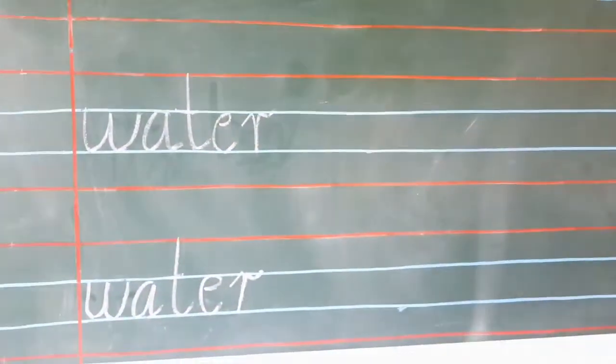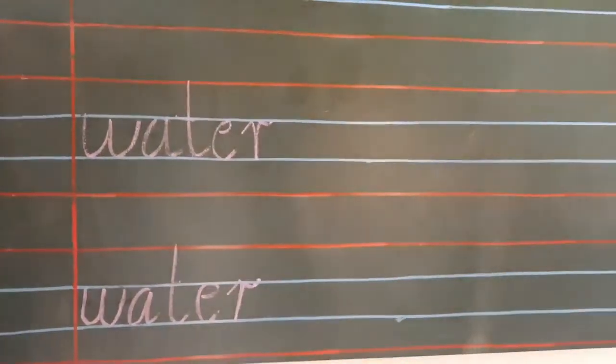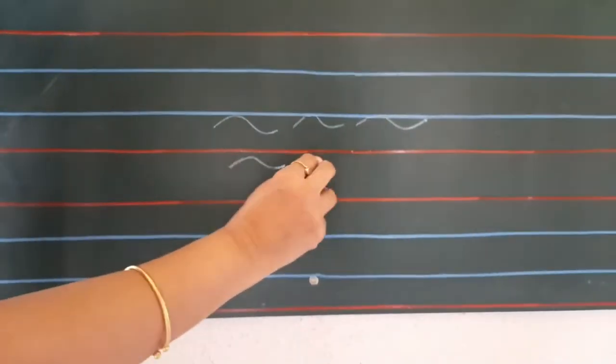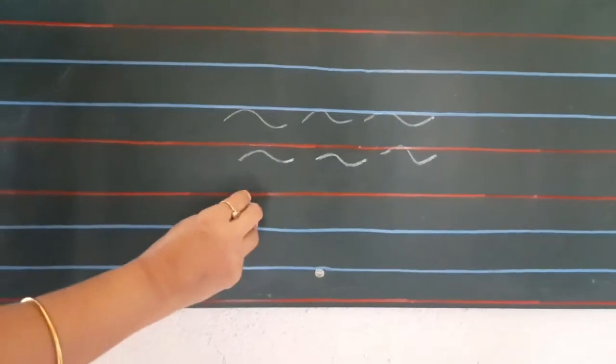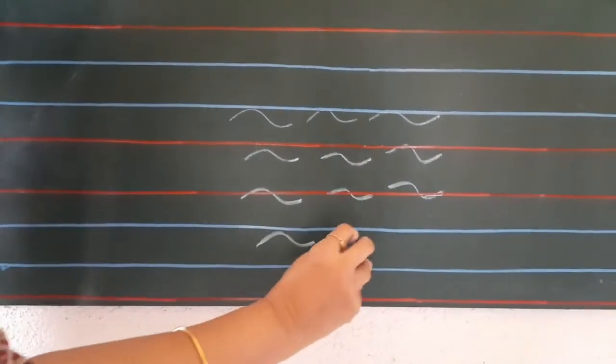And to draw water, it is very easy. So, what we will do? I will just draw like this, zigzag lines directly with blue crayons and make it water.